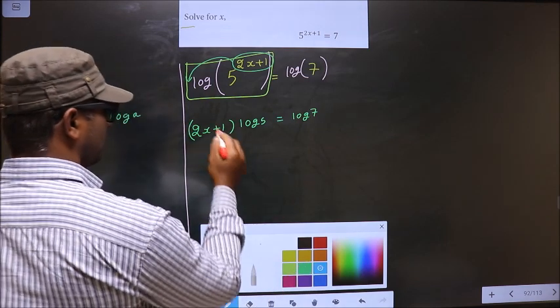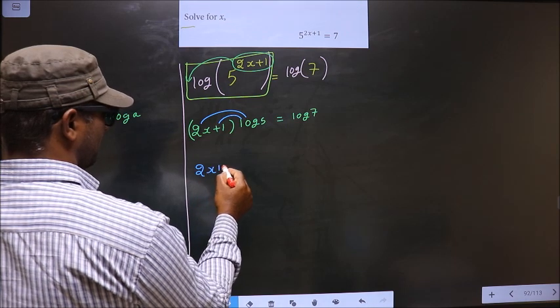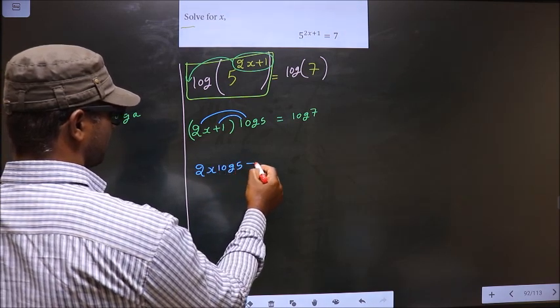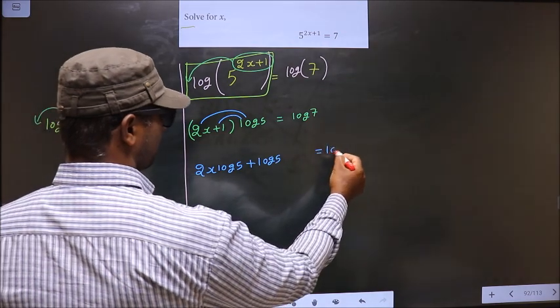Now, you open up the bracket in this way. You get 2x log 5 + log 5 = log 7.